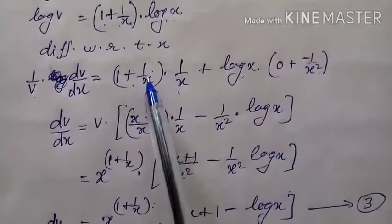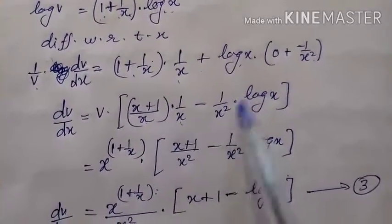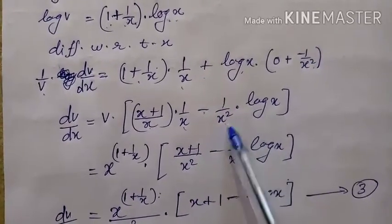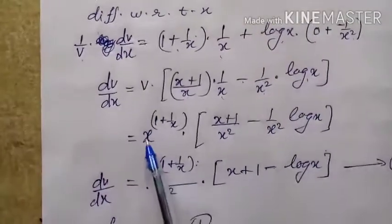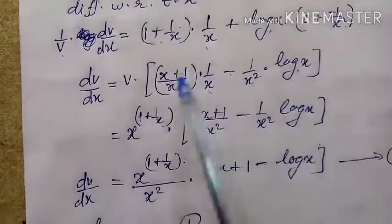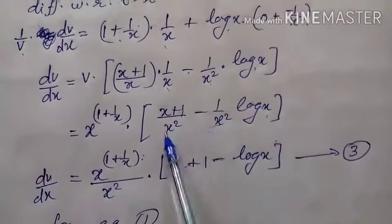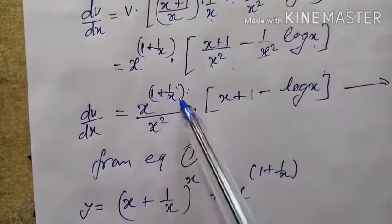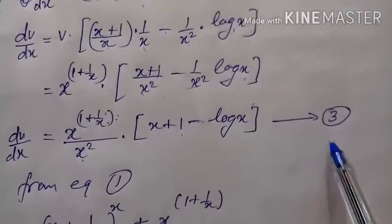Transferring v to the right side: dv/dx = v · [(1/x) + log x · (-1/x²)]. Taking LCM x²: dv/dx = v · (x - log x)/x². Replacing v with x^(1 + 1/x): dv/dx = x^(1 + 1/x) · (x + 1 - log x)/x². Give this equation number 3.